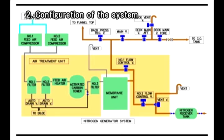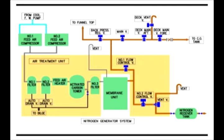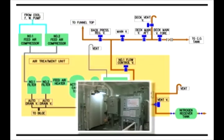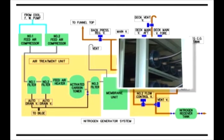The nitrogen generator system feeds compressed air from compressors into membrane modules to separate nitrogen gas from other gases. The operation of the system is monitored and controlled by several sensors. The system consists of components such as compressors to supply compressed air, an air treatment unit to purify the supplied air, and membrane modules to produce nitrogen gas.